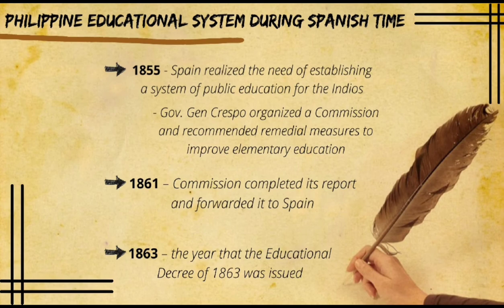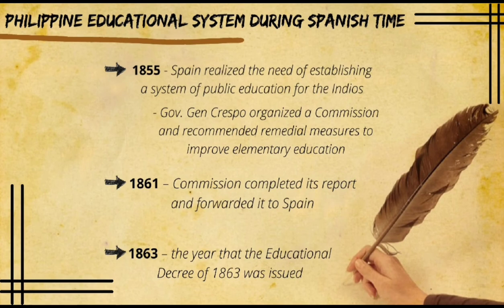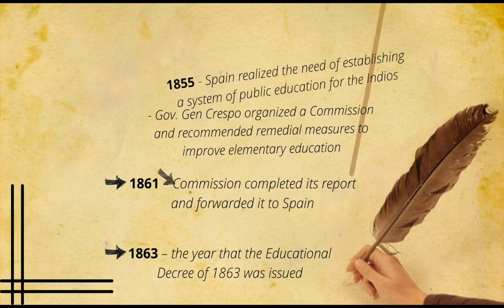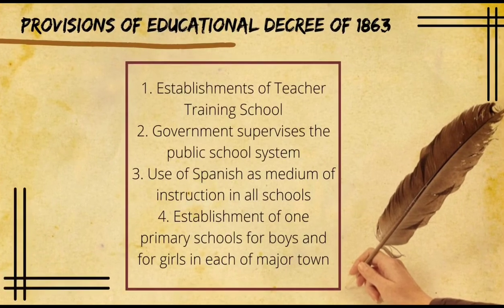Let us now look at the Philippine educational system during Spanish time. In 1855, Spain realized the need to establish a system of public education for the indians — referring to the indigenous people of the Philippines. This was also the year that Governor Juan Crespo organized a commission and recommended remedial measures to improve elementary education. In 1861, the commission completed its report and forwarded it to Spain, and in 1863 the Educational Decree of 1863 was issued.